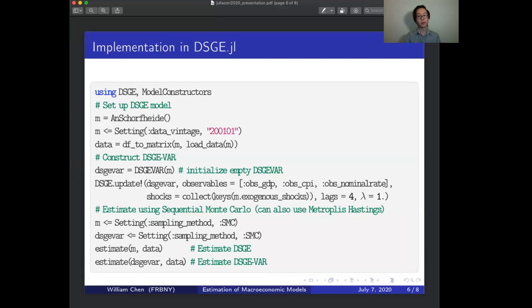On the implementation side, it was quite straightforward to create DSGE-VARs due to multiple dispatch and Julia's typing system. Basically, we just needed to implement DSGE-VARs as a new type, and then to form an instance of this type, you create a DSGE object and then pass it into this constructor. So here we're setting up the DSGE, and here we're initializing empty DSGE-VAR, and then you just need to add information about the VAR side of the DSGE-VAR, such as which observables you want or the number of lags you want.